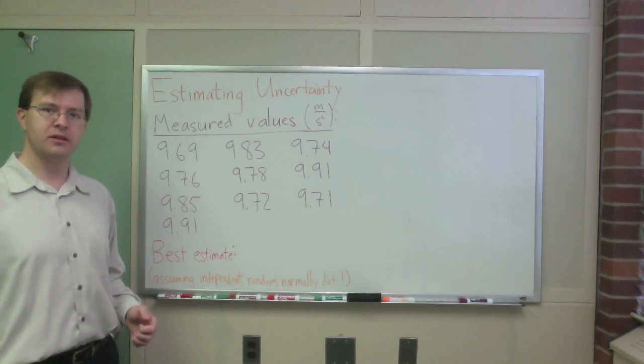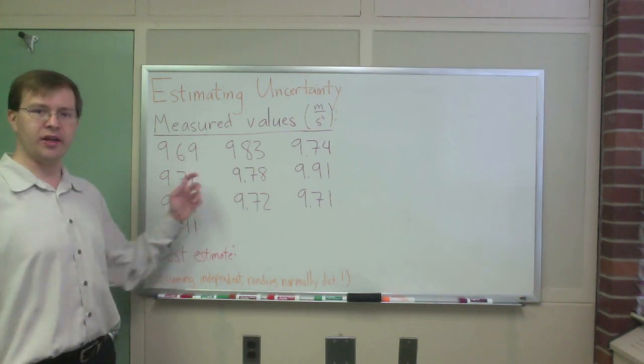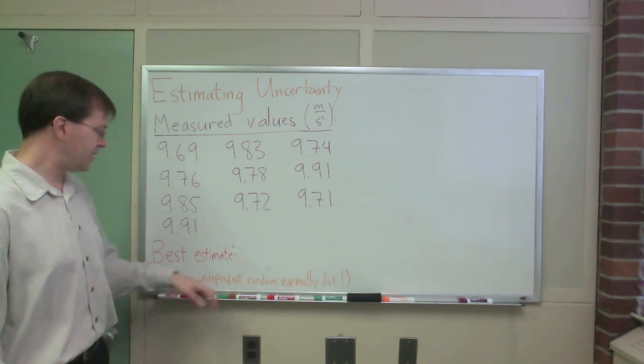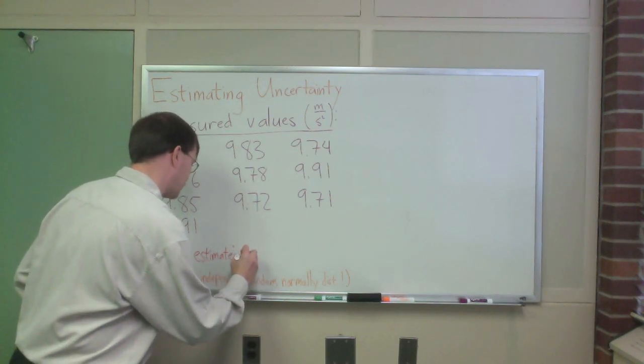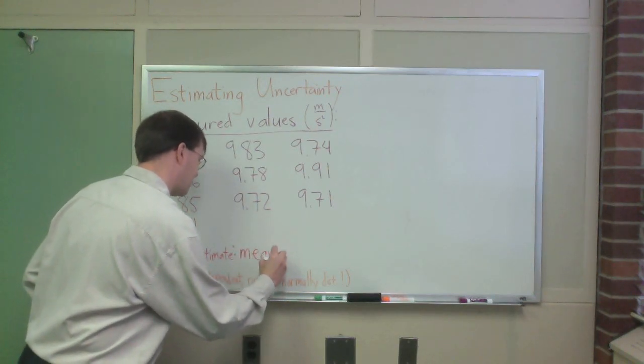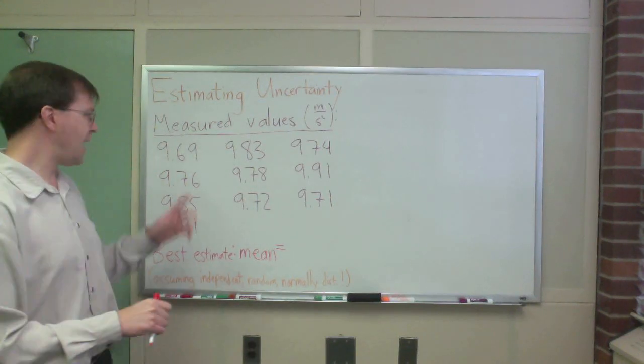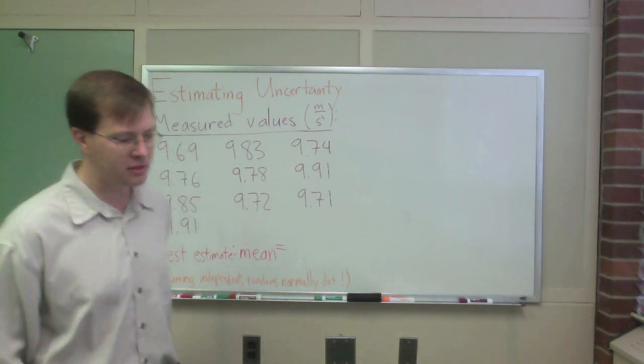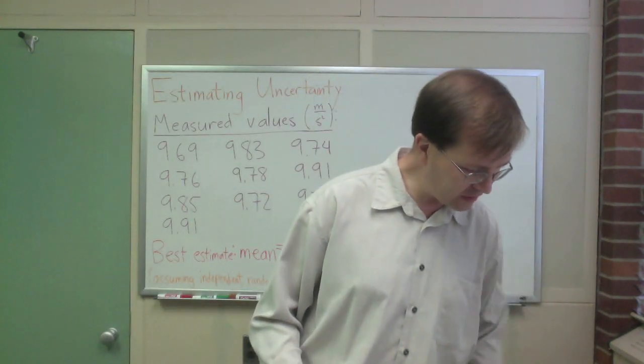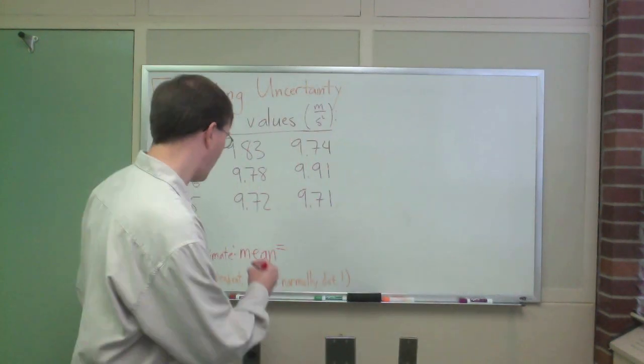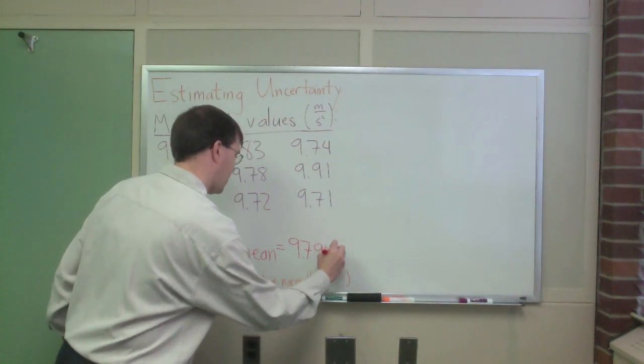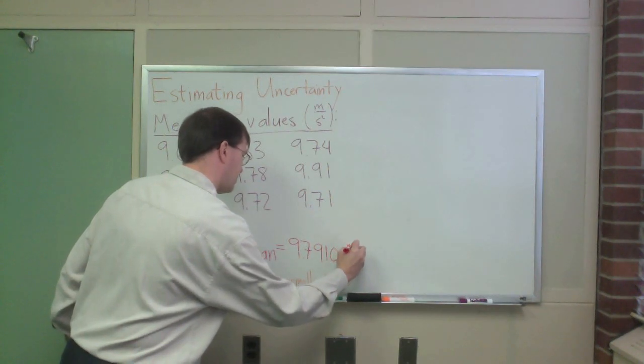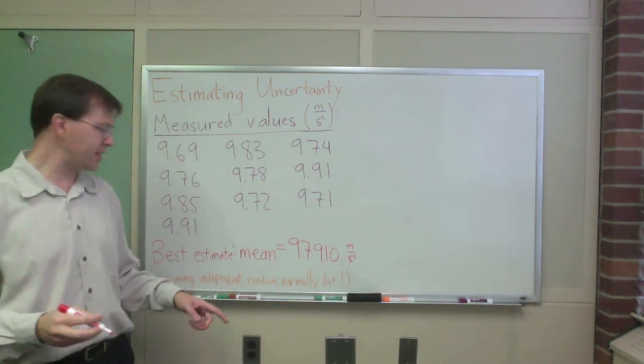So the best estimate for the gravitational field is exactly what you would think. The best estimate is the mean of these ten values. The mean is just the average, the ordinary average, add up all the numbers, divide by ten, and the mean when I calculated this earlier is 9.7910 meters per second squared as units, obviously.